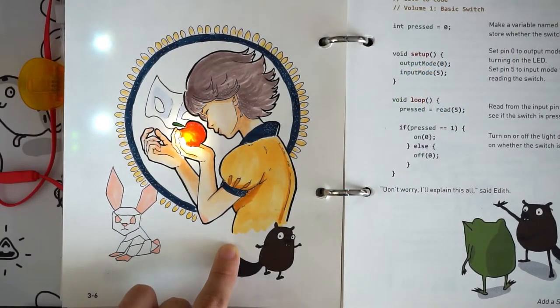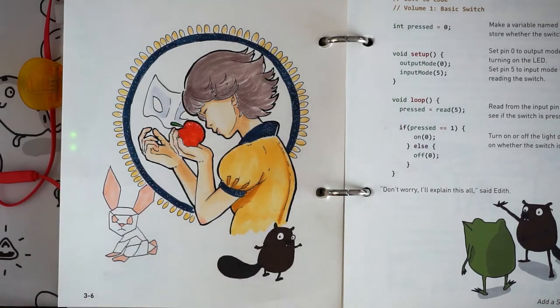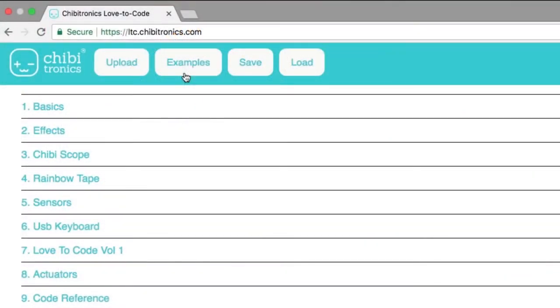In this exercise, we learn how to craft and code for a switch. Let's start by loading the switch example code onto your Chibi chip. Go to ltc.chibitronics.com, click Examples, and then Love to Code Volume 1. You should see a menu item for Basic Switch. Click on Basic Switch.